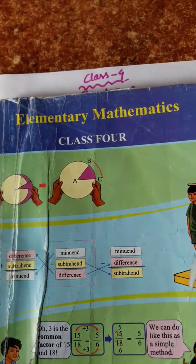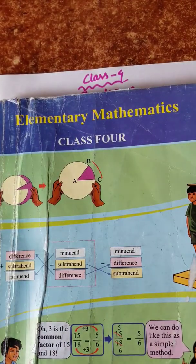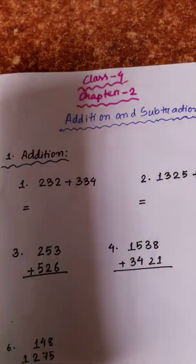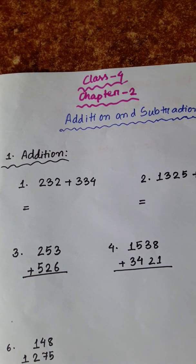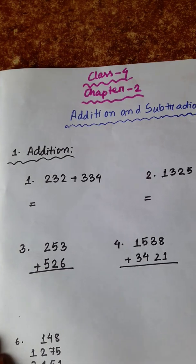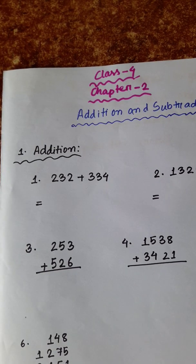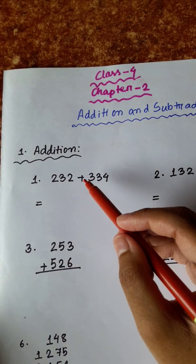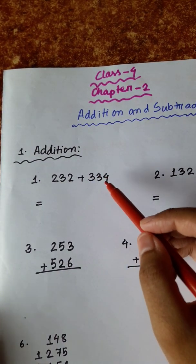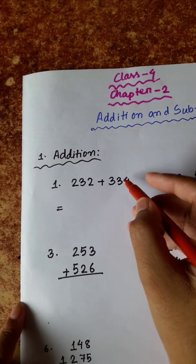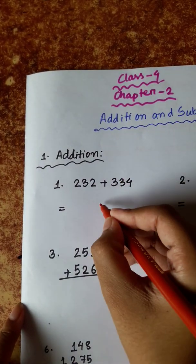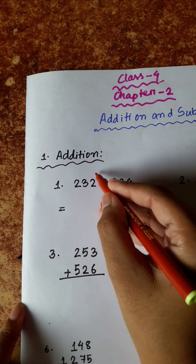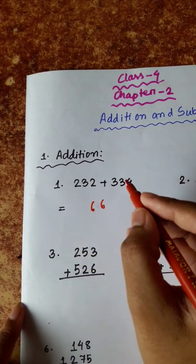School 2020. We are doing Class 4 Chapter 2 elementary mathematics — addition and subtraction. Our first addition problem is 232 plus 334. So 4 plus 2 is 6, 3 plus 3 is 6.